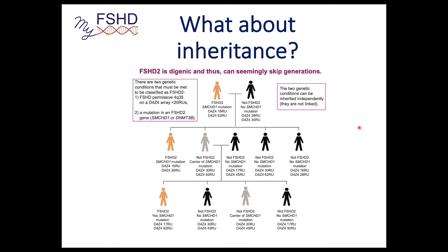FSHD2, as mentioned, is digenic. One region you need is the 4QA region — that's the first gene part. The second part is the SMCHD1 mutation, which is on chromosome 18. So they're unlinked — you can inherit one without inheriting the other. In FSHD1, you only need to inherit the deletion. In FSHD2, there are two things you need to inherit.